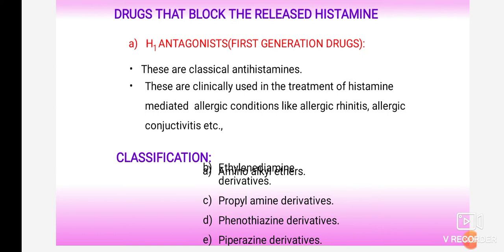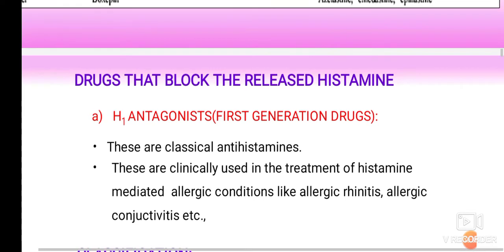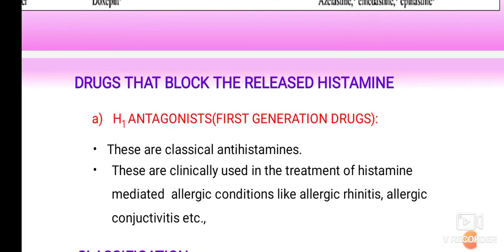H1 antagonists are clinically used in the treatment of histamine-mediated allergic conditions like allergic rhinitis and allergic conjunctivitis. H1 antagonist drugs directly bind to the H1 receptor and block it, so histamine is not able to bind to the H1 receptor, and ultimately there is inhibition of the activity produced by histamine.